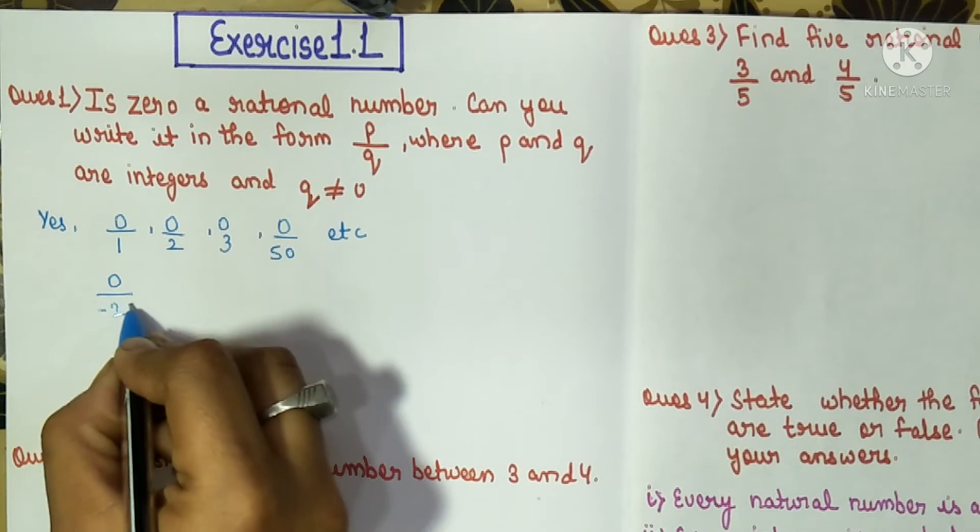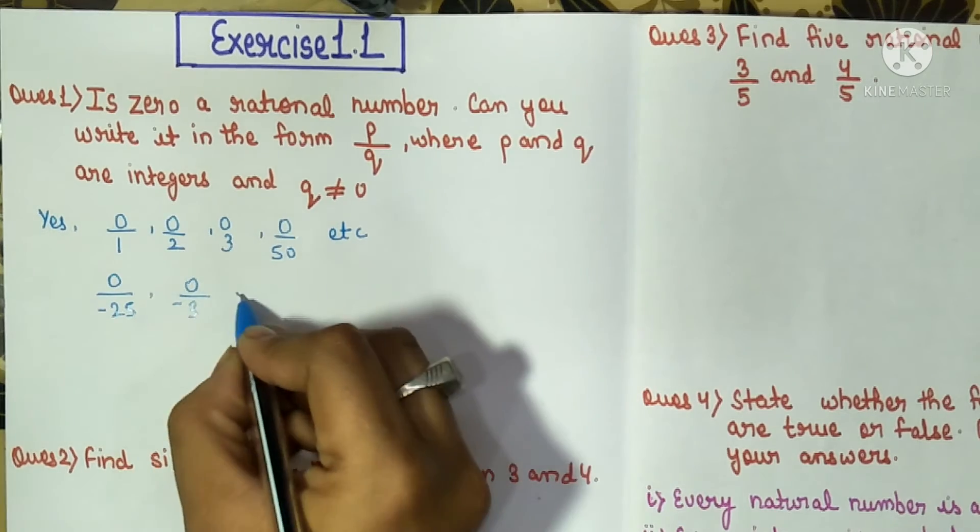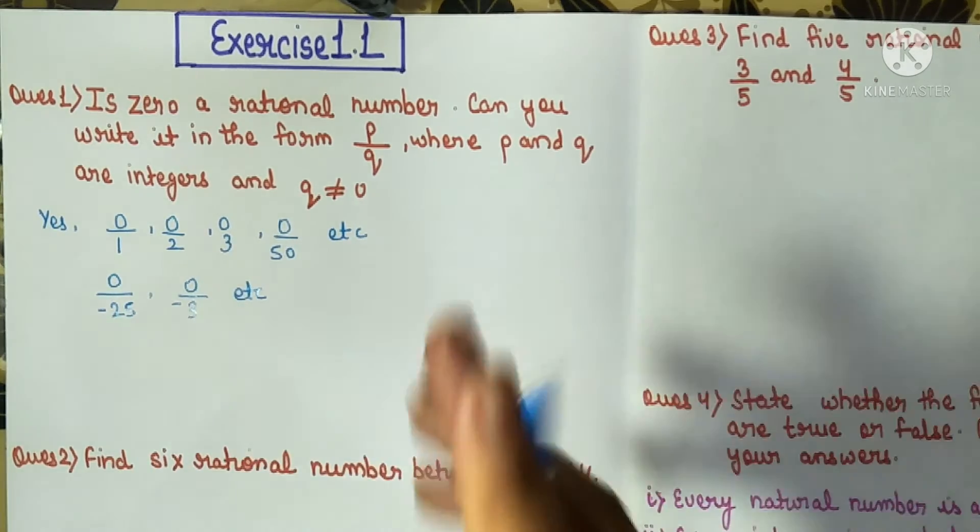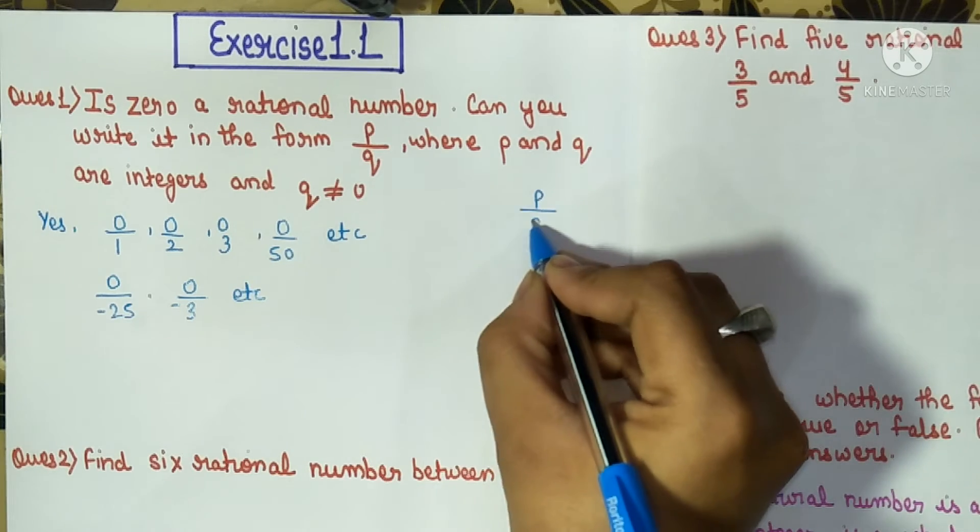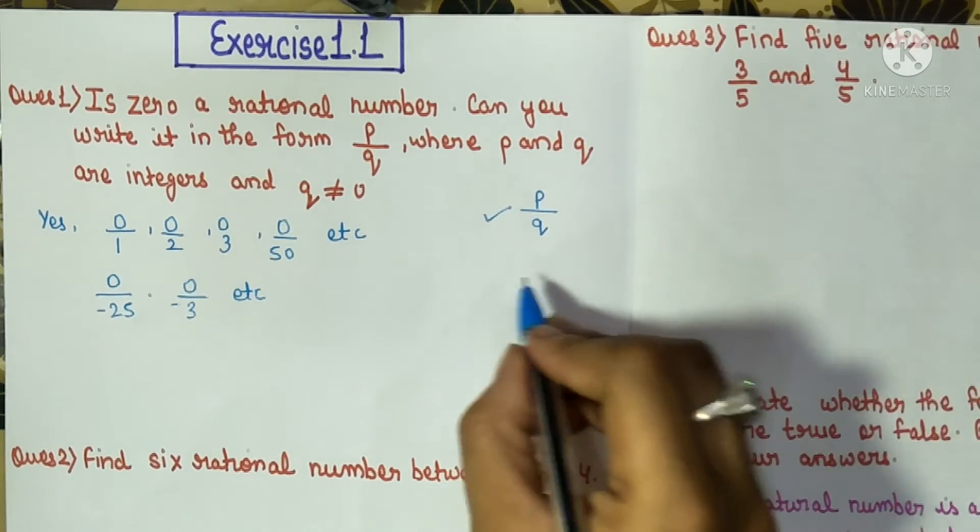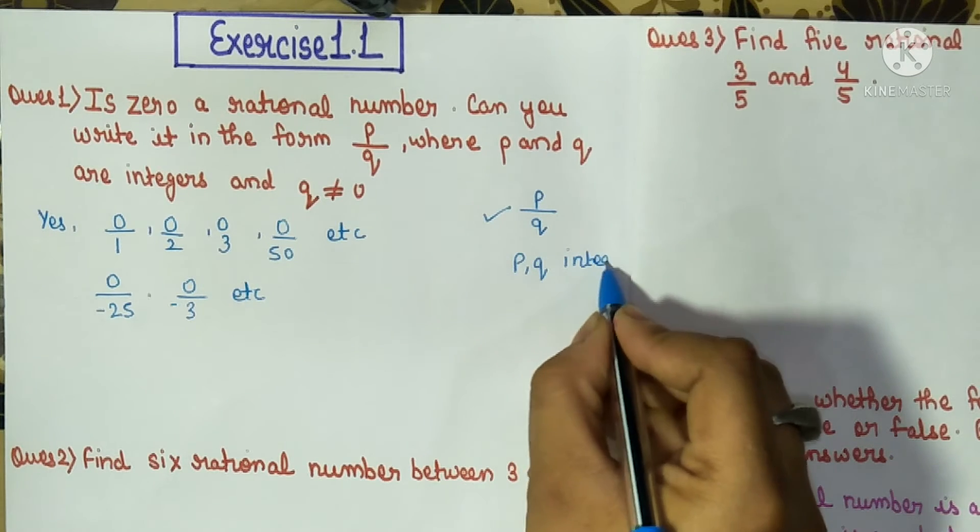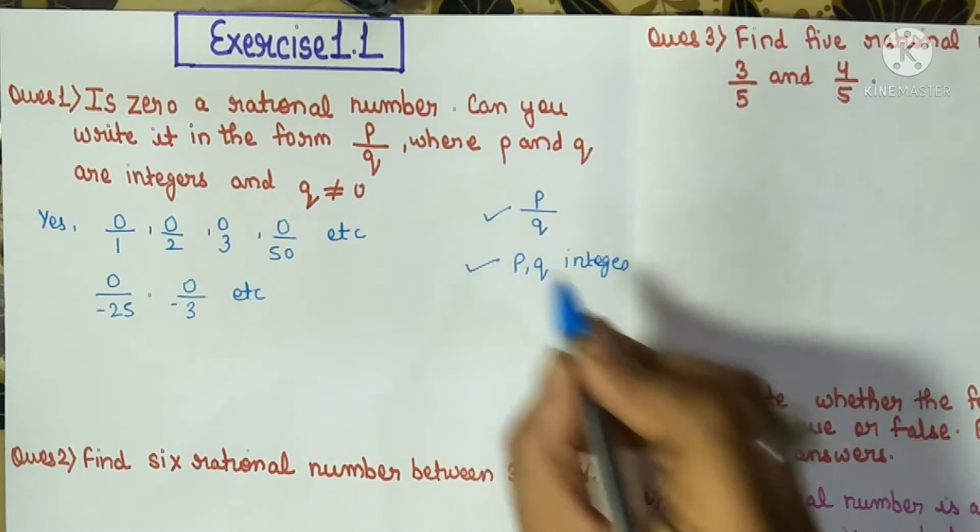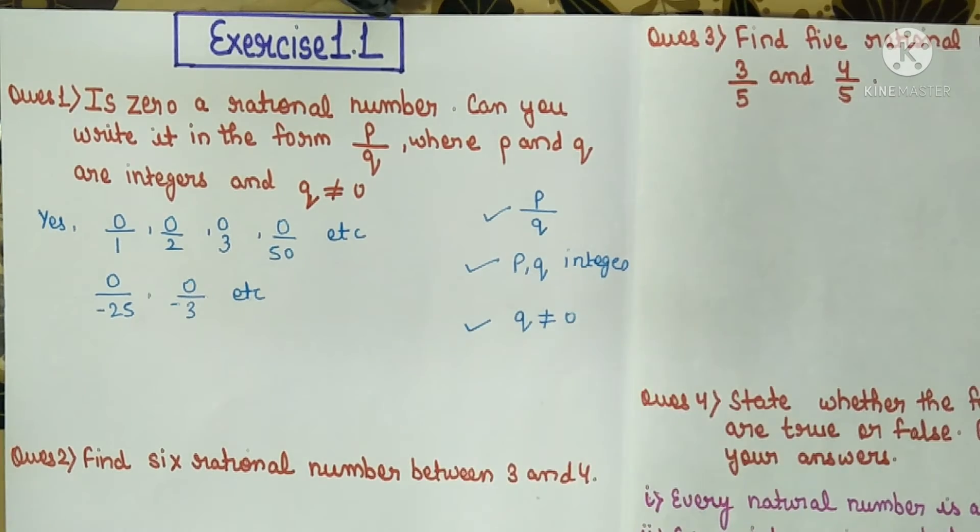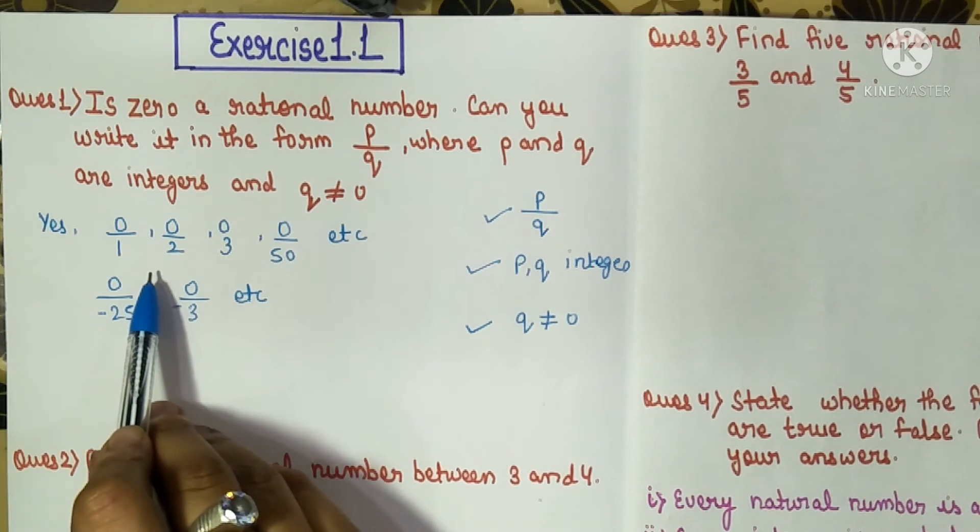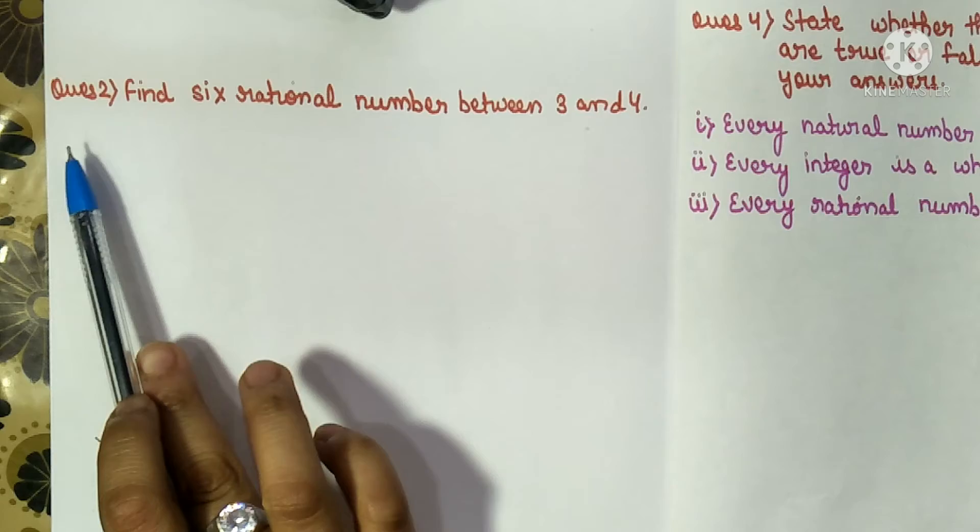And third, q should not be equals to zero—this condition is also satisfied here. So on that basis we can say that zero is a rational number. So let's see question number two.